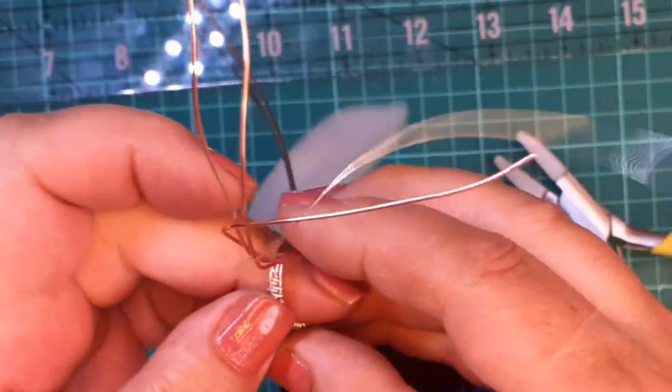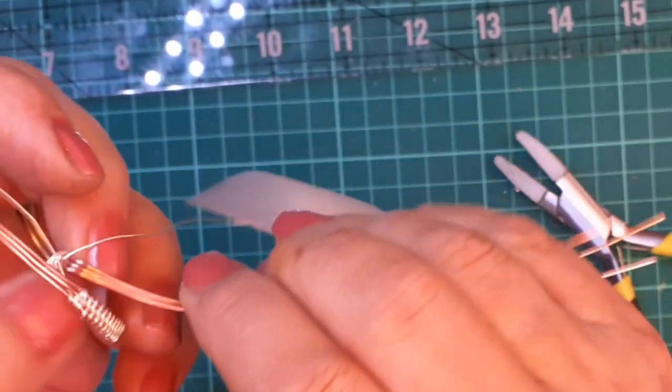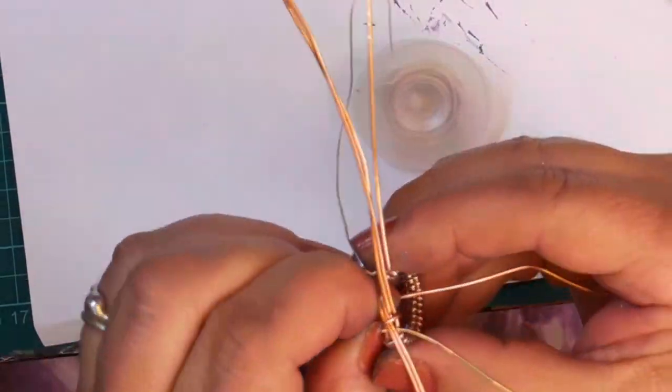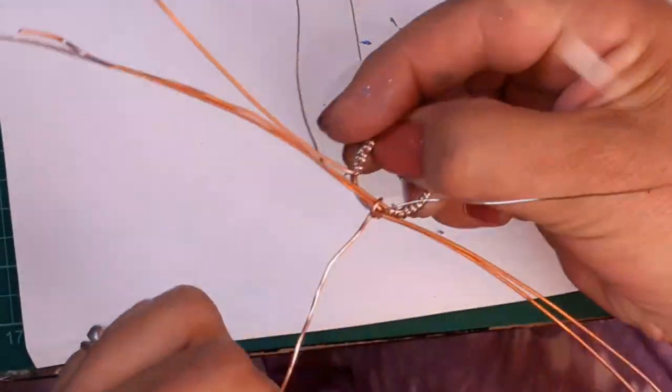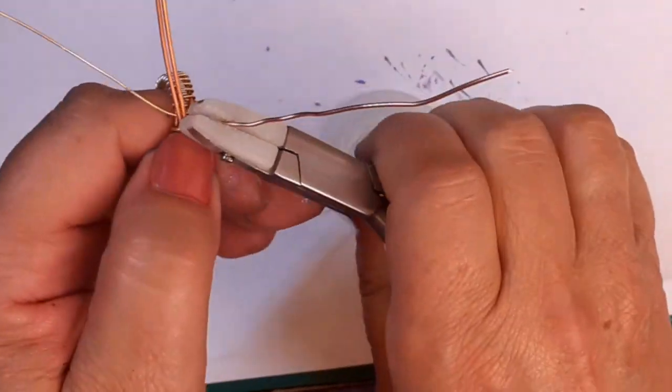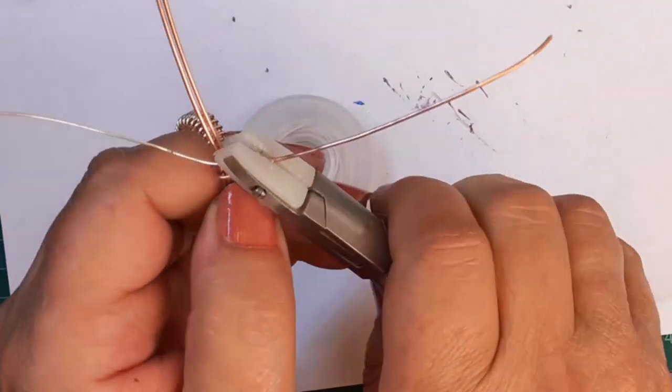Once you have the right size, put the wire together like here. Use the inner wire and wrap it around all three wires. Now I'm going to show you with the diagram how you wrap the wires. Please tell me if you find this useful.